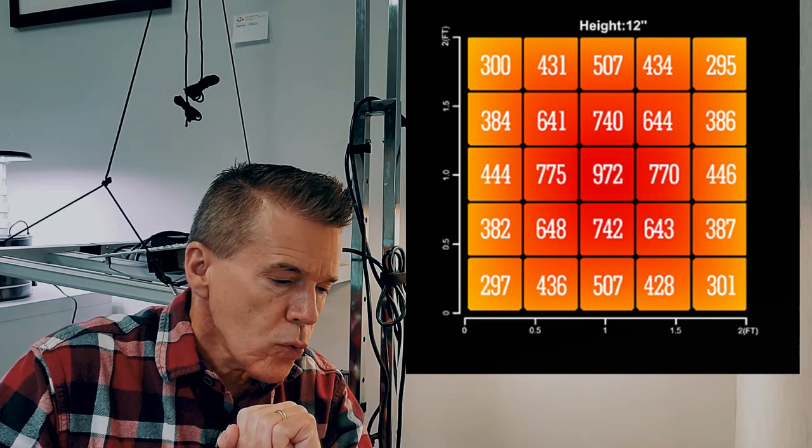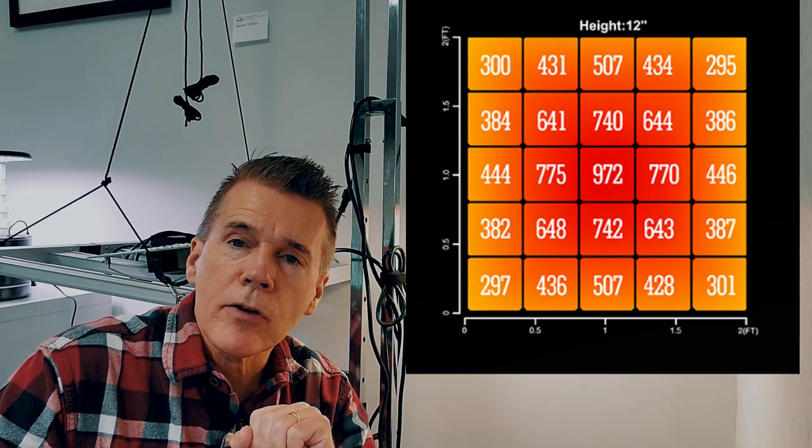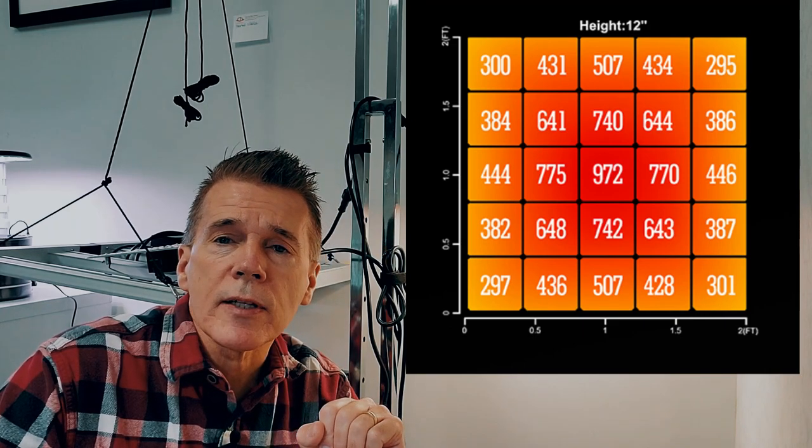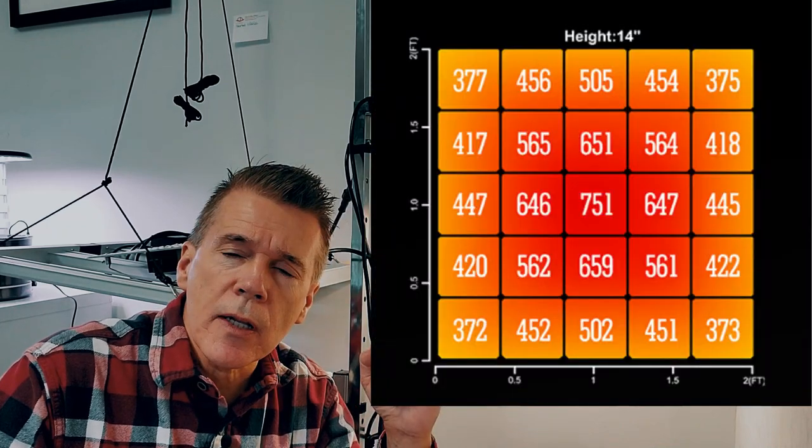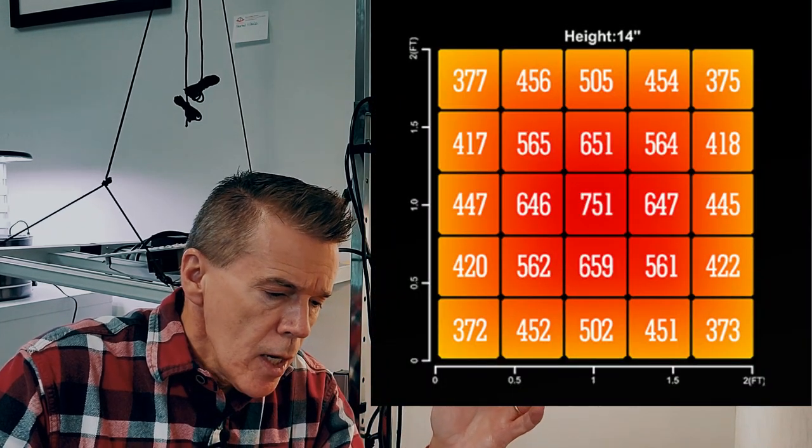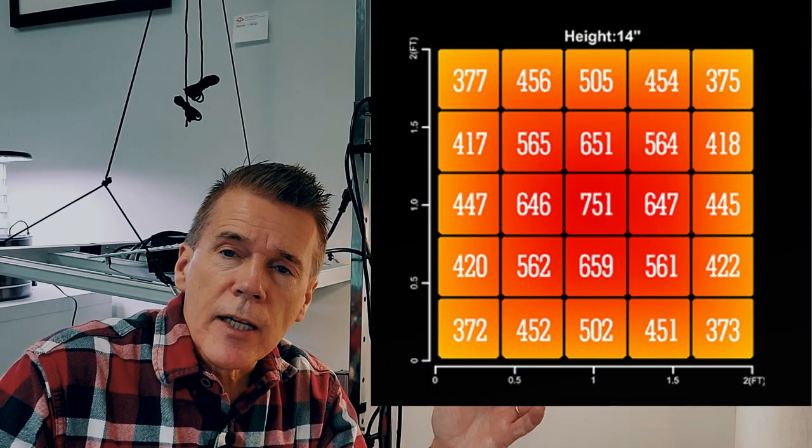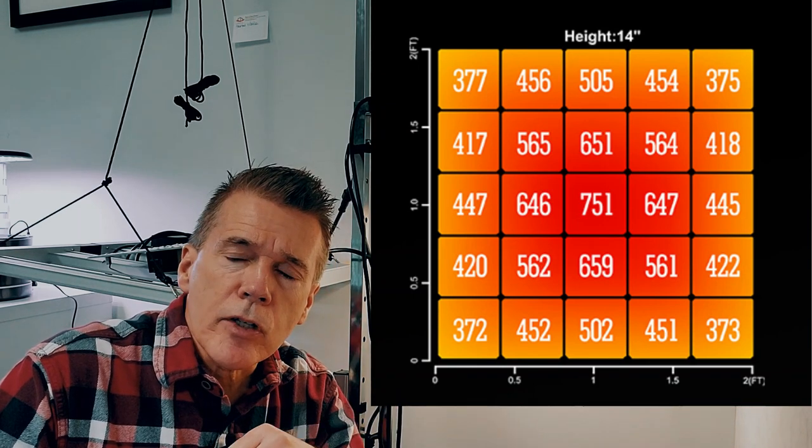With this particular grow light at 12 inch hanging height, it averages about 517.6 ppfd. A little warmer in the center. 14 inches above the canopy, you're looking at 499.68 average ppfd. And it starts to get a little bit more even spread over a 2 foot by 2 foot area.